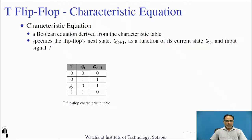In the third row, when T is equal to 1 and present state is 0, the next state is 1. When T is equal to 1 and present state is 1, the next state is 0. So the last two rows specify the relation between next state and present state, and the relation is complement. So you can derive this table from the function table.